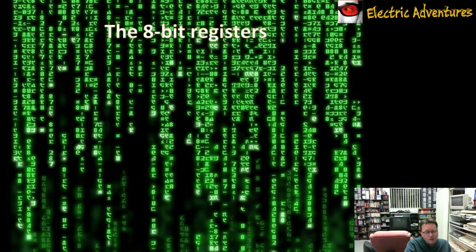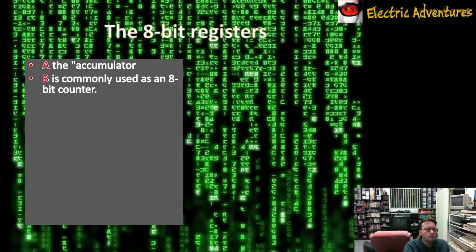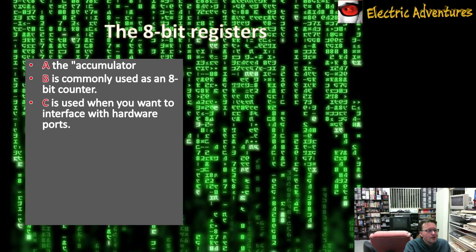Now the registers. The Z80 has both 8- and 16-bit registers, so we'll cover the 8-bit registers first. The most important one is the accumulator. The accumulator is the workhorse of the CPU — it does most of the jobs you need to do: adding numbers together, subtracting them, moving the 1s and 0s around, and transferring things from one place to another. It's a very important register and you'll be using it all the time. We also have B, which is quite often used as a counter.